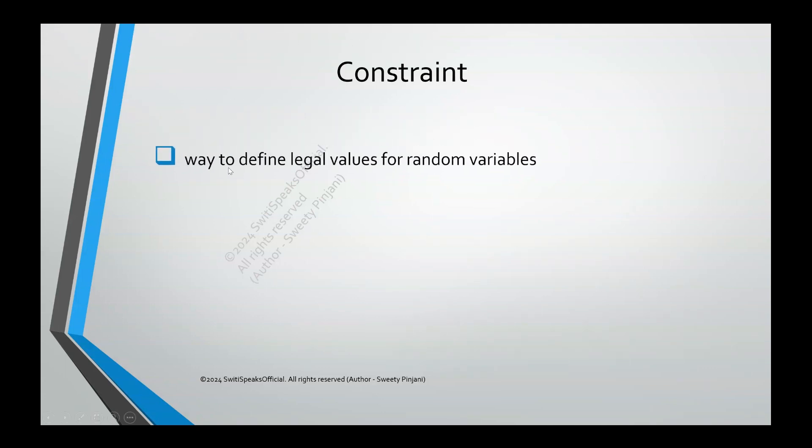What is Constraint? It is a way to define legal values for a random variable. In the previous lecture, we had seen how to declare your variable as random using rand and randc keywords. We had also seen different randomization methods and functions in System Verilog. Now, there should be some legal values which you are generating for this random variable.